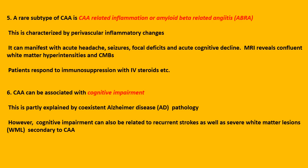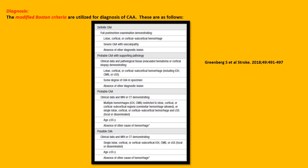Number six: CAA can be associated with cognitive impairment. This is partly explained by co-existent Alzheimer's disease pathology; however, cognitive impairment can also be related to recurrent strokes as well as severe white matter lesions secondary to CAA. For diagnosis, the modified Boston criteria are utilized and are classified as: definite CAA, which requires a full post-mortem examination; probable CAA with supporting pathology; probable CAA without supporting pathology; and possible CAA.